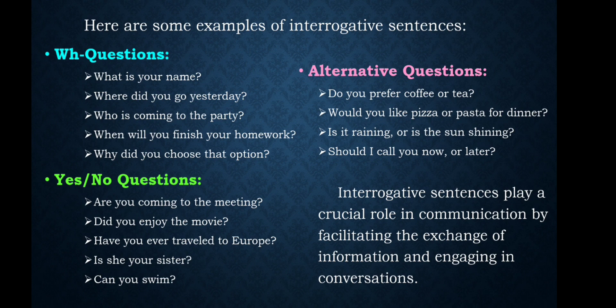Next, yes or no type questions. Yes or no type questions are questions which begin with a helping verb or modal auxiliary. For example: Are you coming to the meeting? Do you enjoy the movie? Have you ever travelled to Europe? Is she your sister? Can you swim? These questions begin with a helping verb and are called yes or no type questions. The answer for this type of question will be yes or no.